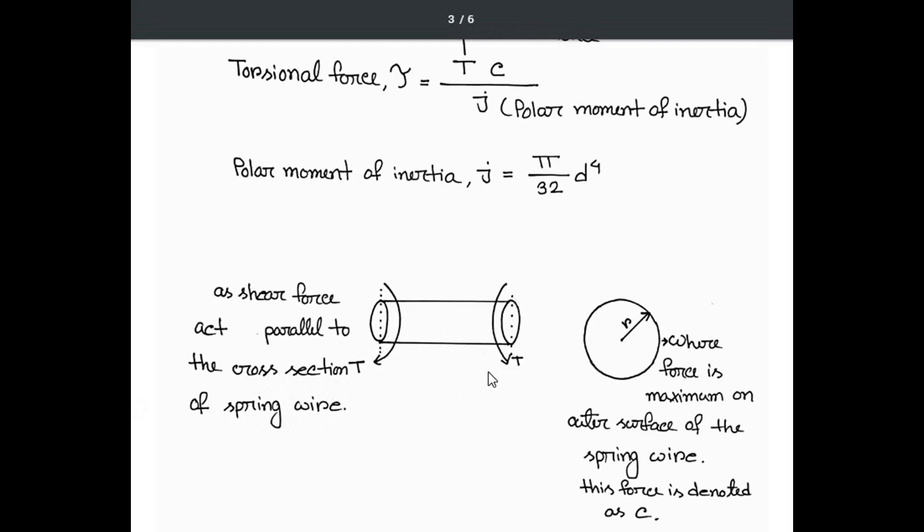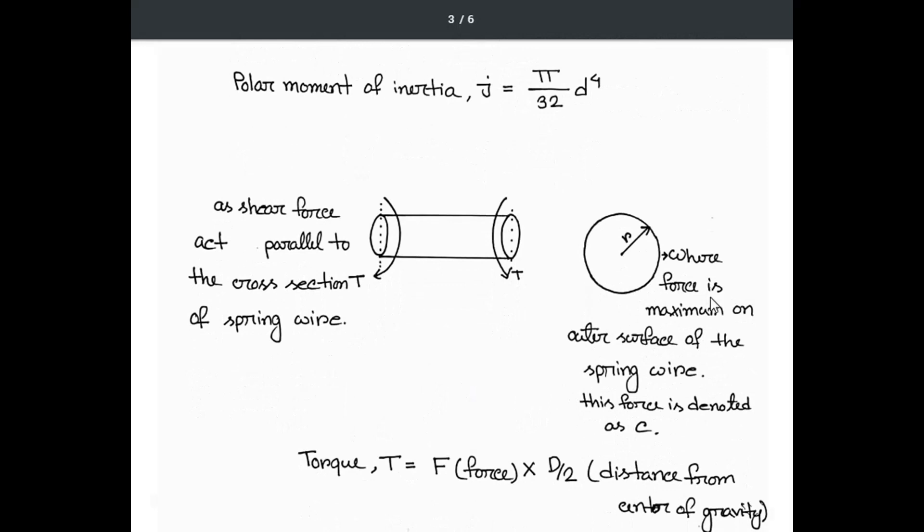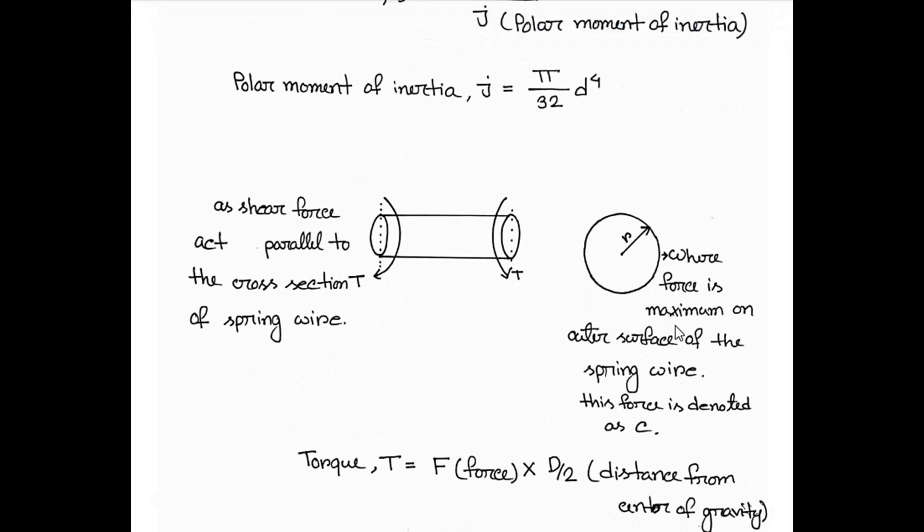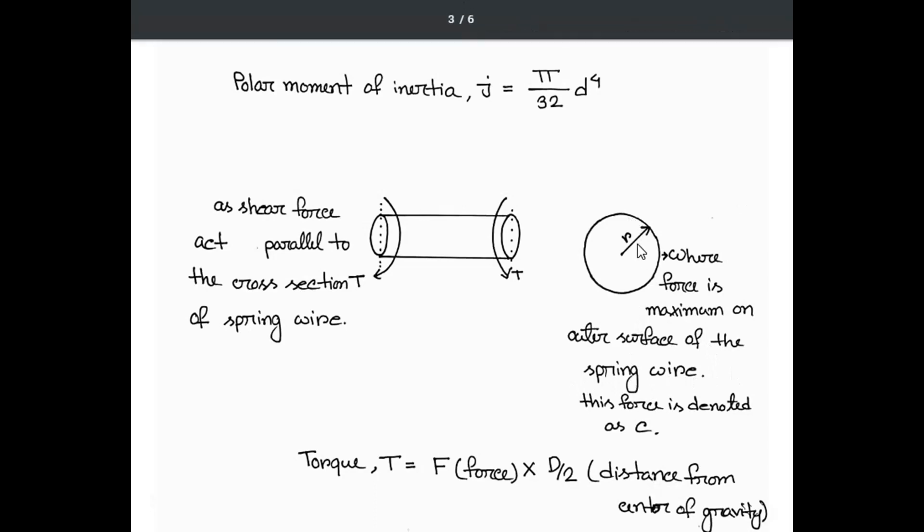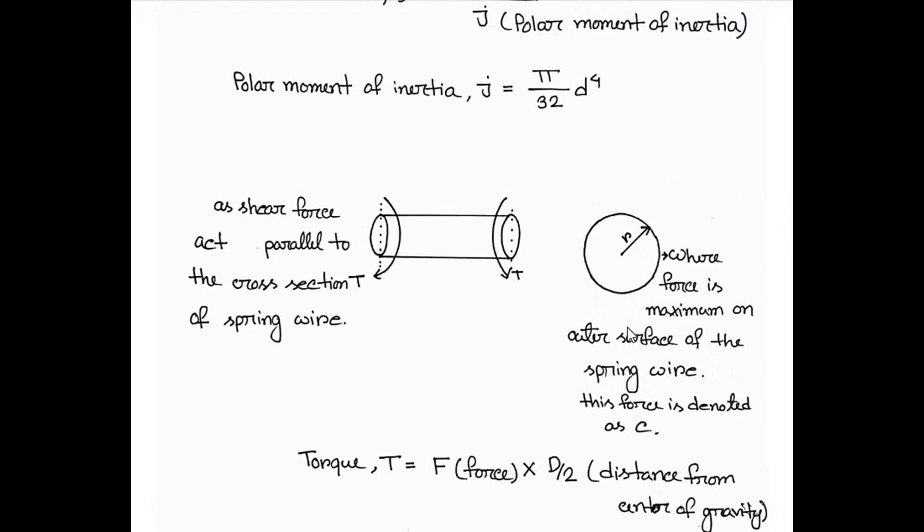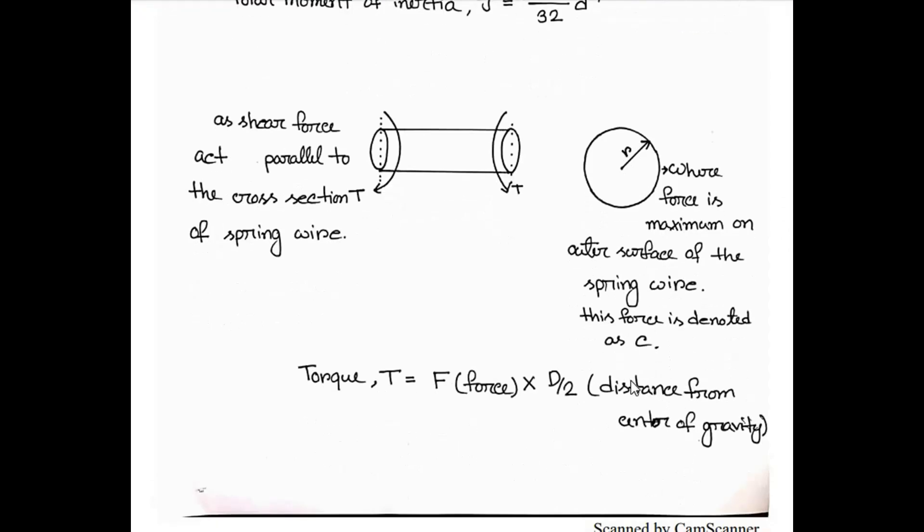The shear force acts parallel to the cross section of spring wire. Let's talk about C, which we skipped earlier. Force is maximum on the outer surface of the spring wire due to the shear force. We denote this as C. If we consider T equals torque, then torque equals force times distance from the center of gravity where we applied the force.